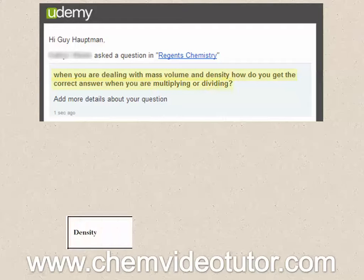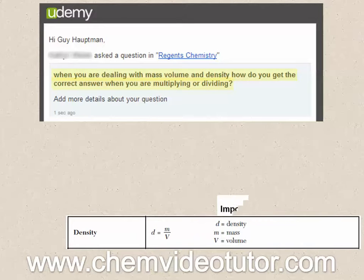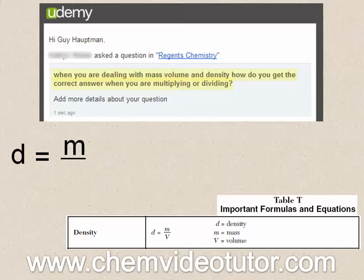Well, first off, the formula for density can be found on Table T of the chemistry reference tables, where the density, d, is equal to the mass, m, divided by the volume, V.